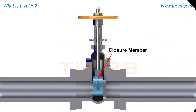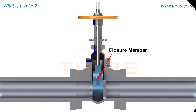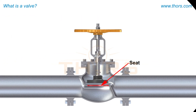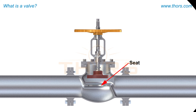The closure member is the component that moves to open, regulate or shut off the flow of the media through the valve. The valve seat is a sealing component or surface inside the body of the valve that comes into contact with the closure member to close the valve.